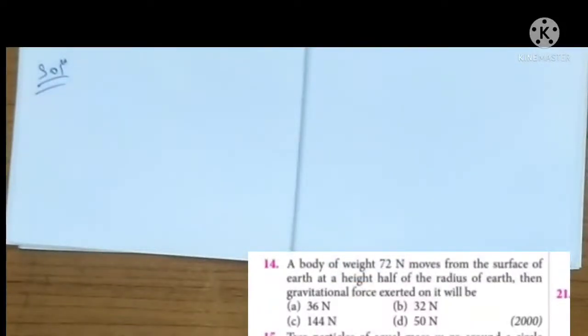A body of weight 72 newton moves from the surface of the earth at a height half of the radius of earth. Then a gravitational force exerted on it will be. Four options diya hai. So we have to calculate which option is correct. If basic is strong, we can solve this question easily.